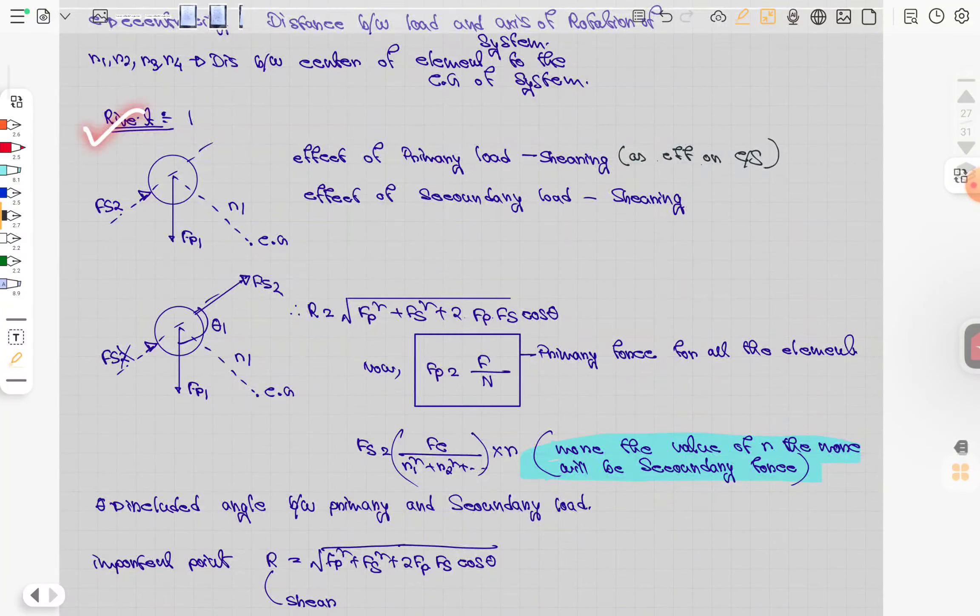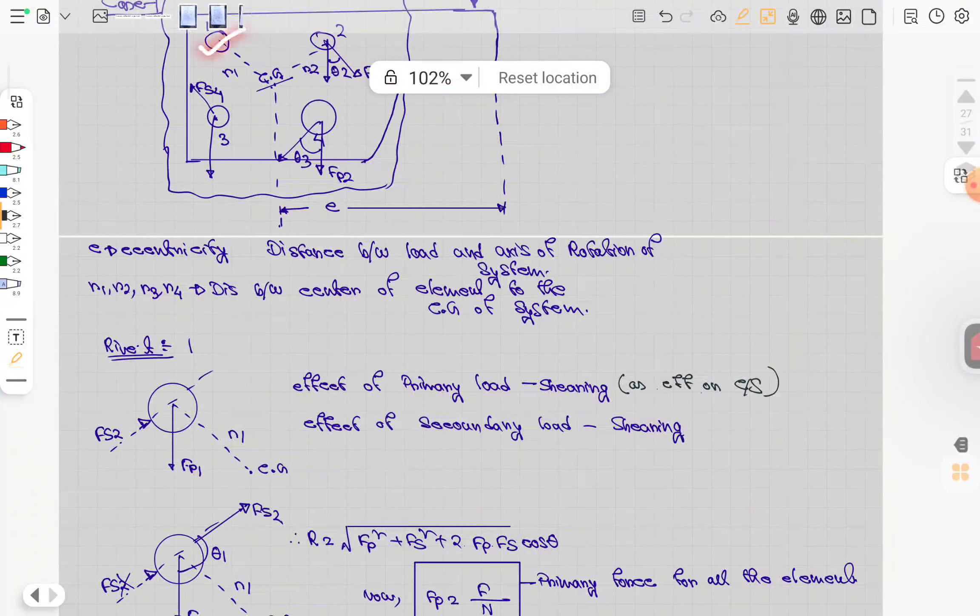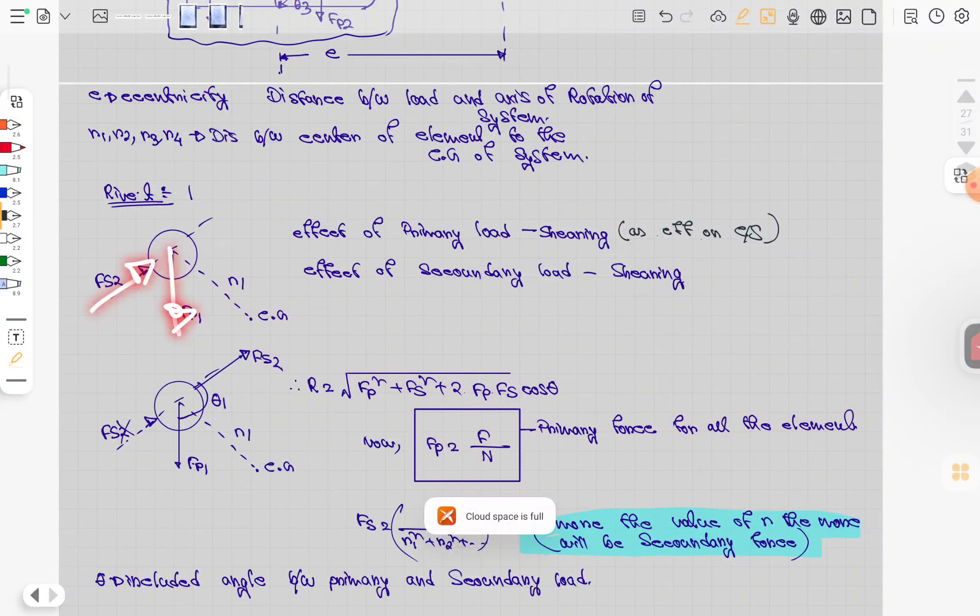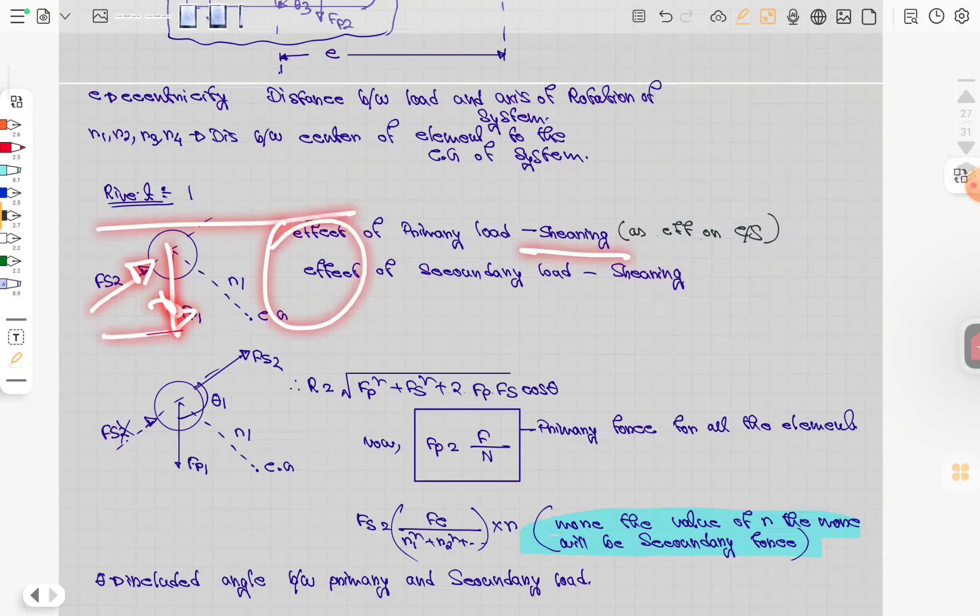For element one, if secondary force is working, the primary force is also working. The primary force is shearing because it's parallel to the cross section, and the secondary force is also shearing because it's parallel to the cross section.